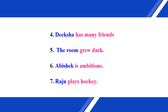All these sentences are divided into two parts. The first part is subject and the remaining part is predicate. That is, in each sentence, the first part in blue color is the subject and the remaining part in pink color is the predicate.